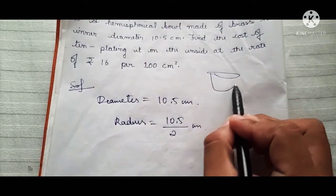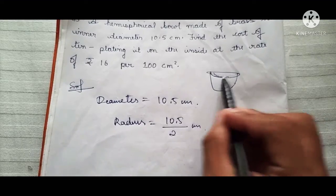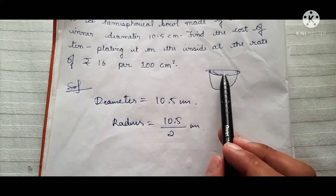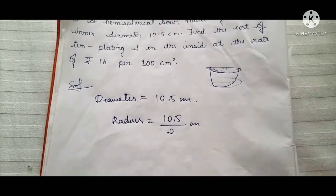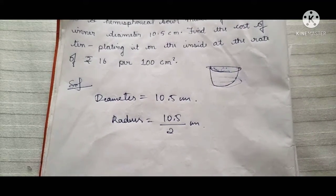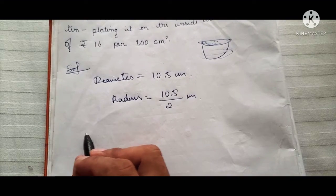Okay, so here the bowl will be in the shape of this. The upper part will be empty so we are not going to find that area. We are just going to find this curved surface area. Okay, so now here curved surface area of hemisphere.